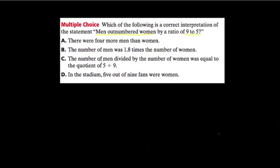C, the number of men divided by the number of women was equal to the quotient of 5 divided by 9, and D, in the stadium, 5 out of 9 fans were women.